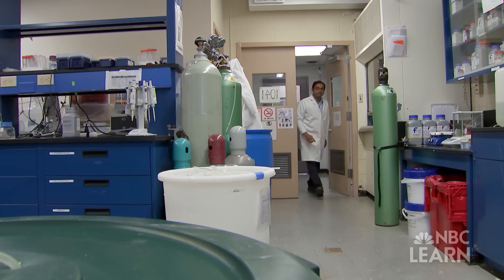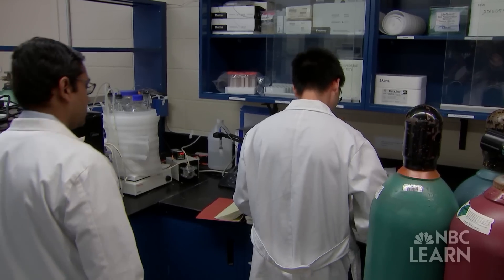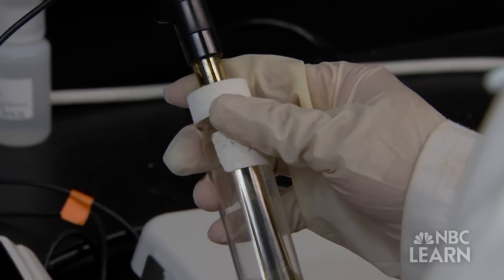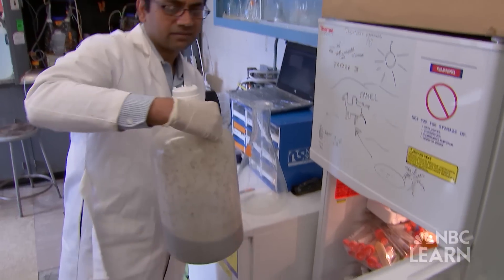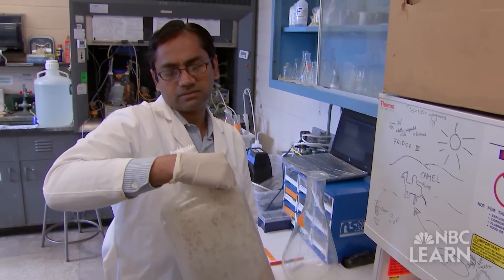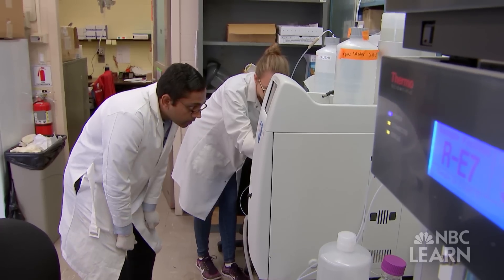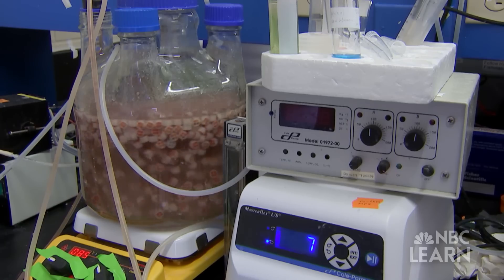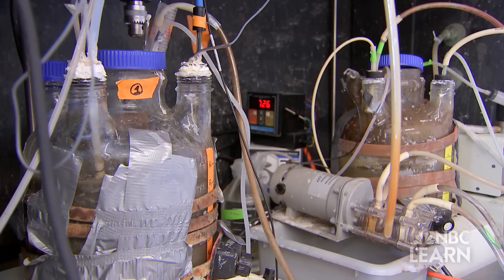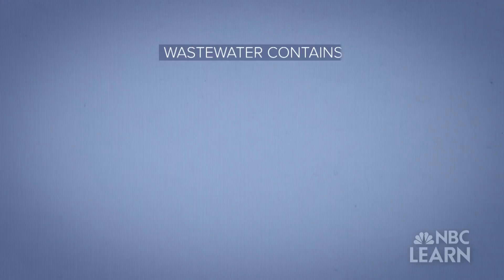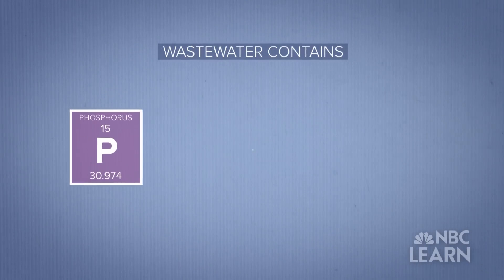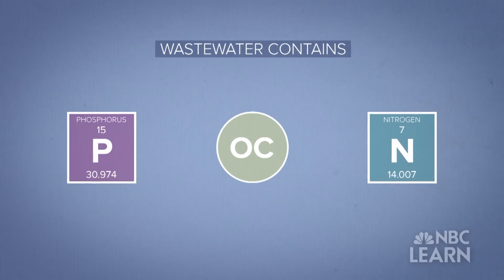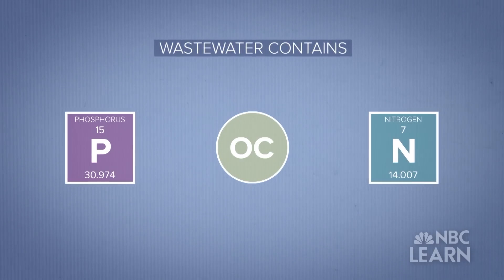Kartik Chandran is a professor of earth and environmental engineering at Columbia University, funded by the National Science Foundation. He investigates new, more efficient ways to treat wastewater. Wastewater contains elements such as phosphorus, organic carbon, and nitrogen, which are often removed during the treatment process.